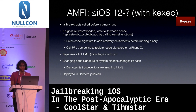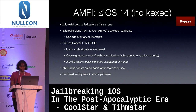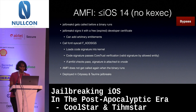For iOS 12 and below with kernel execution, jailbreakd can get called before a binary runs. If the signature wasn't loaded, we write to its VNode cache by replicating UBC_CS_blob_add — we patch the code signature to add arbitrary entitlements before running the binary, and call PPL to register the code signature. This bypasses all of AMFI including CoreTrust, and changing the code signature of system binaries demotes their trust level so you can inject into them. This was deployed in Chimera. For iOS 14 and below without kernel execution, jailbreakd signs the binary with a free expired developer certificate (which chains back to Apple, so it passes CoreTrust), adds arbitrary entitlements, and calls the syscall to add the signature. This was deployed in Odyssey and Taurine.